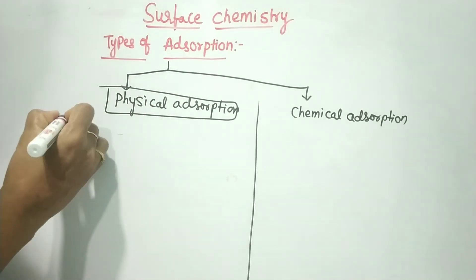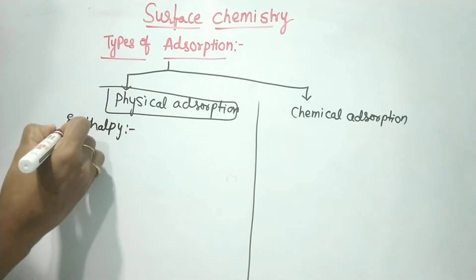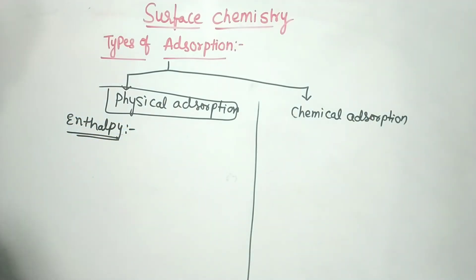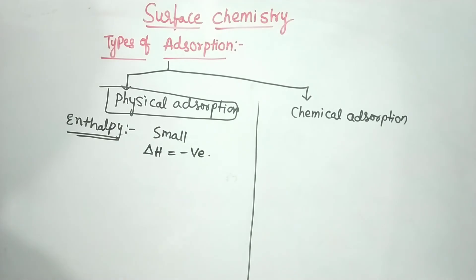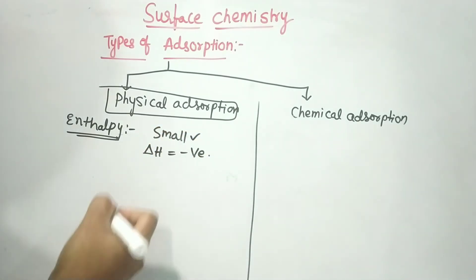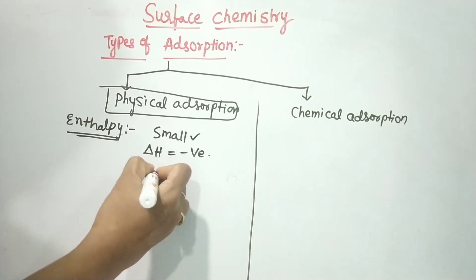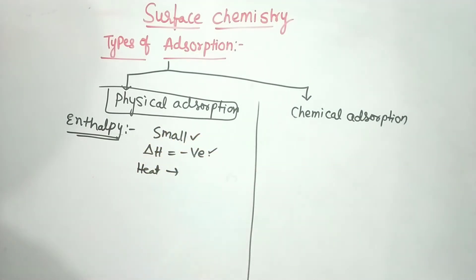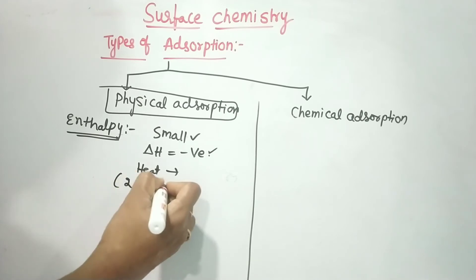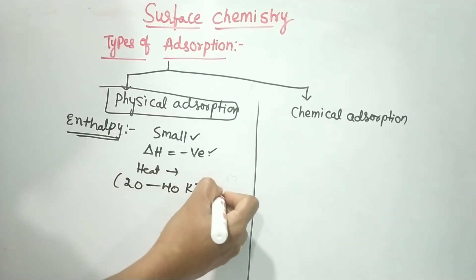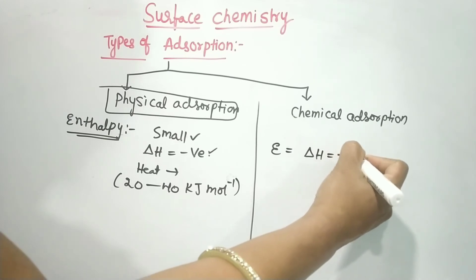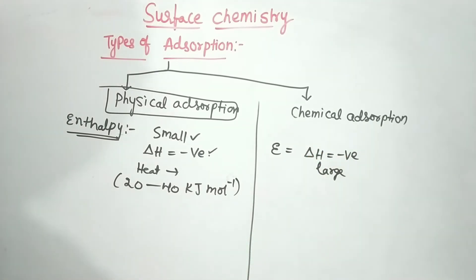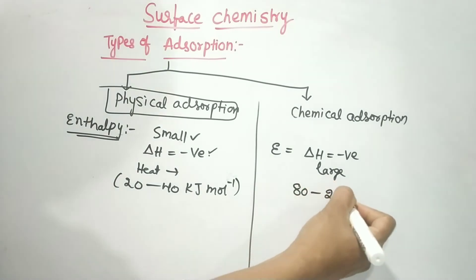Next, we consider the enthalpy of adsorption. For physical adsorption, the enthalpy (delta H) is negative and the value is small — in the range of 20 to 40 kJ per mol. For chemical adsorption, the delta H value is also negative but large — in the range of 80 to 240 kJ per mol.